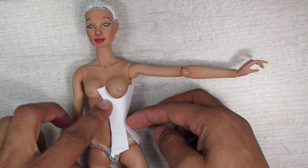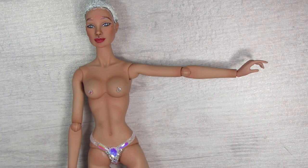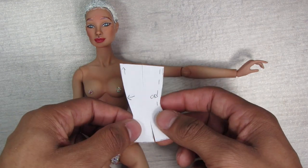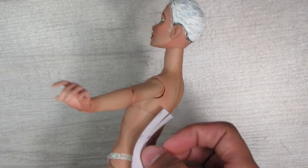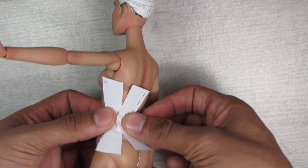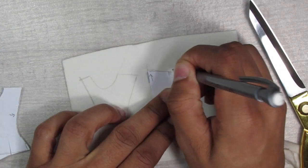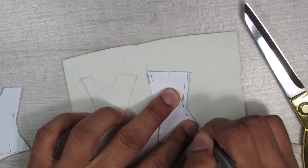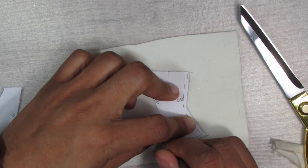Once you have that pattern transferred to paper you can go ahead and cut it out and check the fit. You can see here I actually had to add little slits to the tops and bottoms just because the Integrity Toys dolls are a little bit curvier than the vintage reproduction Barbies. So you'll just keep that in mind whenever you're cutting it out of your actual fabric you're wanting to use for the corset.